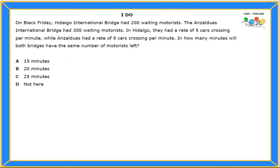So what are we talking about here? We're talking about two bridges: the Hidalgo International Bridge and the Ansel Duas International Bridge. They're telling you that they have so many cars waiting. Hidalgo has 200 cars waiting — that means the line has more or less 200 cars. While Ansel Duas has 300 cars waiting. Notice how even though Ansel Duas and Hidalgo don't have the same number of cars waiting, there's another factor that makes a huge difference: how fast are the cars crossing?